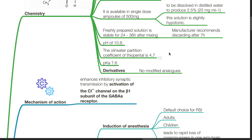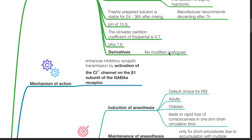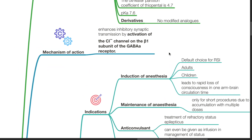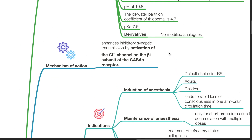The oil-water partition coefficient of thiopenthal is 4.7 and the pKa is 7.6. It has no derivatives or modified analogues. Mechanism of action of thiopenthal: it enhances inhibitory synaptic transmission by activation of the chloride channel on the beta-1 subunit on the GABA-A receptor.